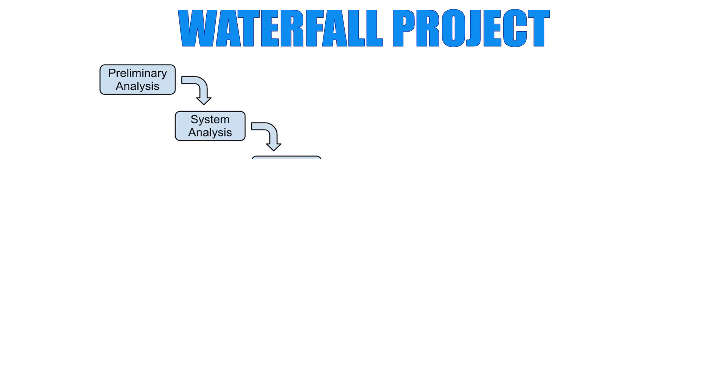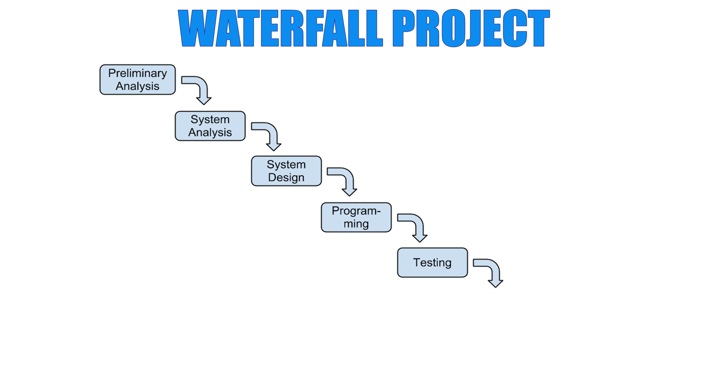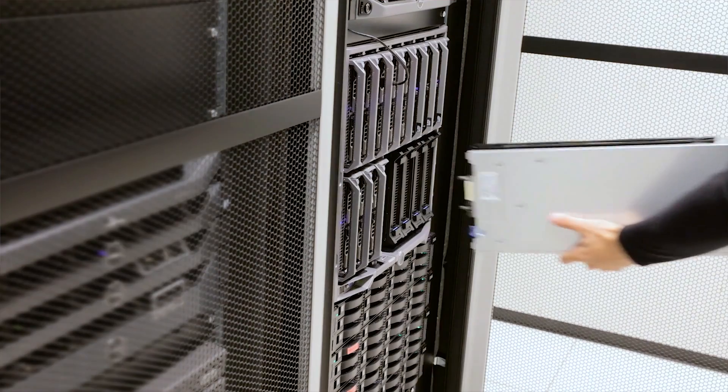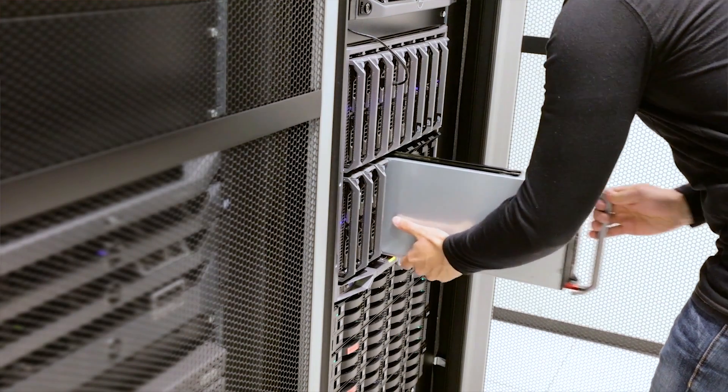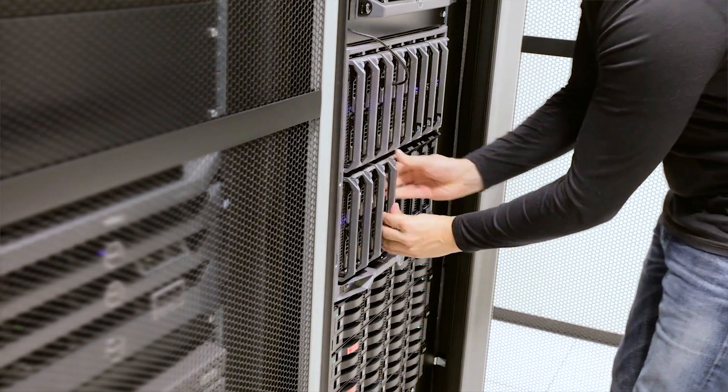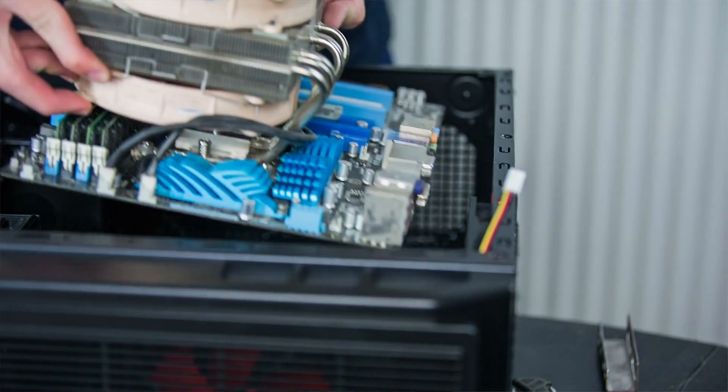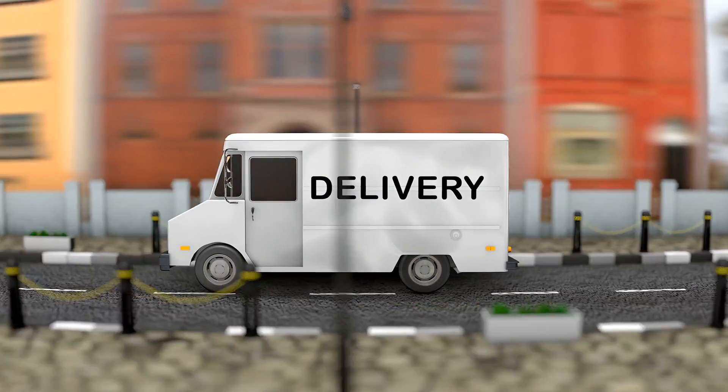In the IT world, you tend to see more waterfall-type projects — things are lined out sequentially: do A, then B, then C. That works well because tasks often depend on each other. For example, you can't install a server until you build it, can't build it until you have the parts, and can't get the parts until you get approval from finance to cut a PO. All of those things have to happen sequentially.